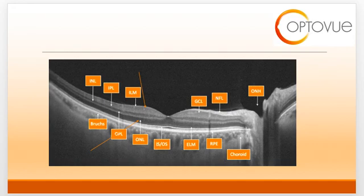You may recall this slide from previous webinars where I have delineated the various parts of the retina and choroid. Macular telangiectasia has the propensity to affect both the inner and outer retina, including the choroid. Thus, there are multiple orange arrows on this OCT indicating the broad scope of potential involvement with this disease.